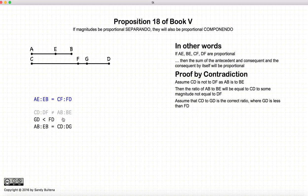We are also going to assume that in this particular instance, that GD is less than FD. So here are the ratios that are equal.